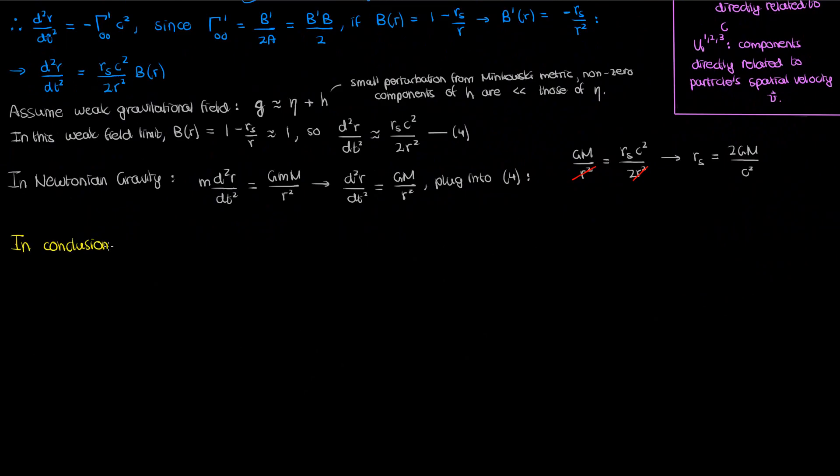So finally, after all this hard work, we've derived the Schwarzschild metric, the metric of the four-dimensional spacetime surrounding a static, spherically symmetric mass, which I will write here as the following. The constant R_S, the 2GM over C squared, by the way, has a special name. It's called the Schwarzschild radius.